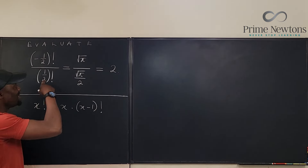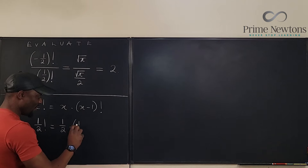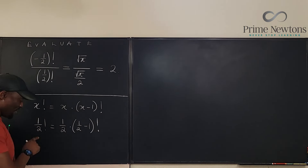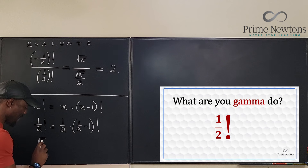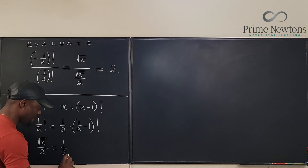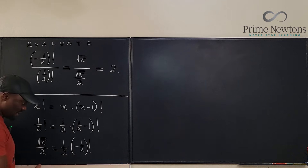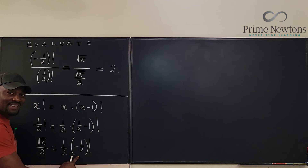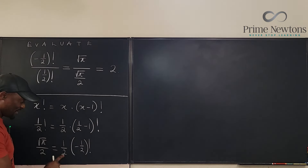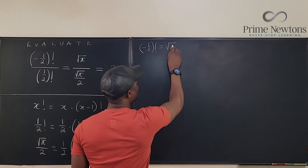Let x equal 1/2. So (1/2)! equals (1/2) times (1/2 − 1)!, which is (1/2) times (−1/2)!. From the previous video using the gamma function or the pi function, (1/2)! equals the square root of pi over 2. So the square root of pi over 2 equals (1/2) times (−1/2)!. Multiplying both sides by 2, we get that (−1/2)! equals the square root of pi.